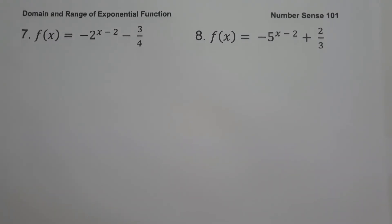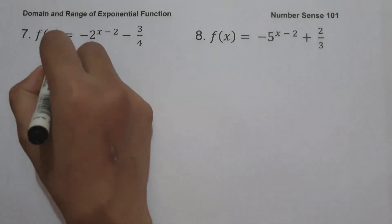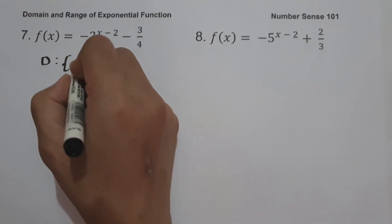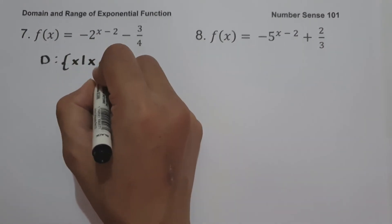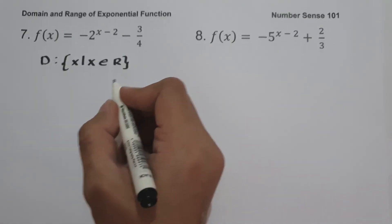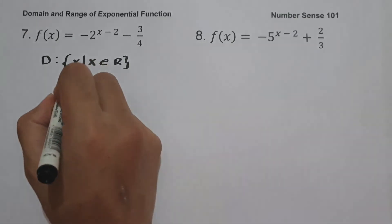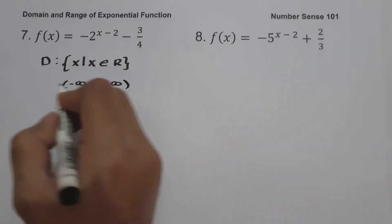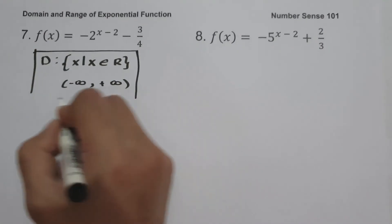On example number 7: f(x) = negative 2 raised to x minus 2 minus 3 over 4. The domain is the set of x values such that x is the set of all real numbers, or in interval notation, from negative infinity up to positive infinity.